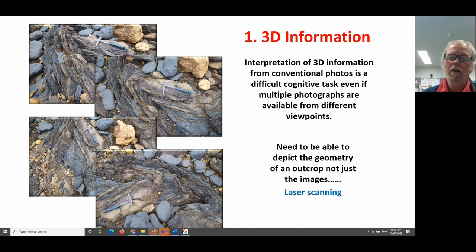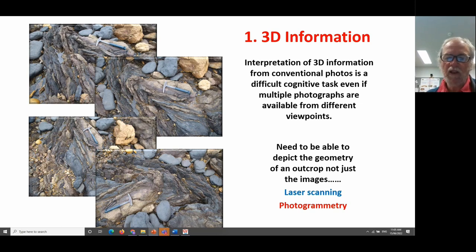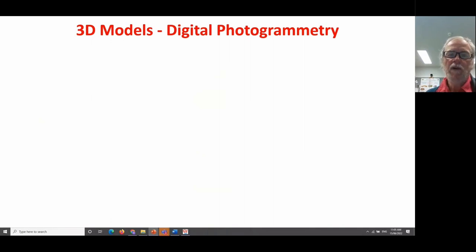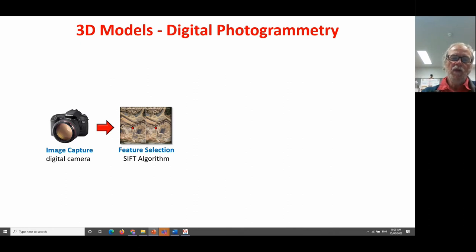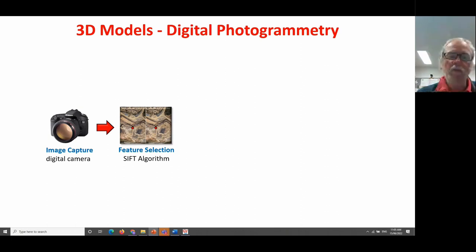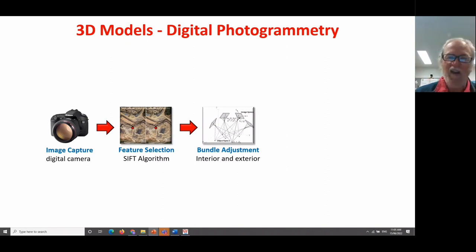We've experimented with both laser scanners and photogrammetry, but I'm going to focus on photogrammetry, which has seen a revolution in the last 10 to 15 years. Photorealistic 3D models are produced by digital photogrammetry, starting with image capture with any standard digital camera. What really makes this work is a clever piece of programming developed in the late 1990s called the SIFT algorithm — Scale Invariant Feature Transform — which enables common points between two photographs taken at different scales and from different observation directions to be identified.